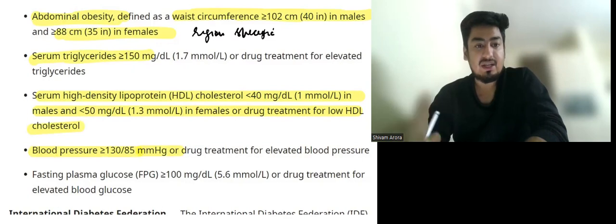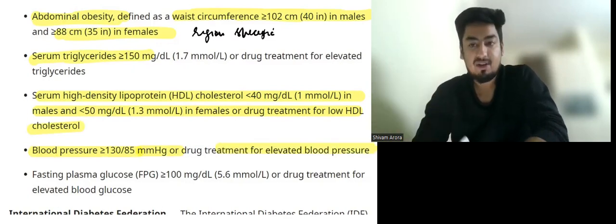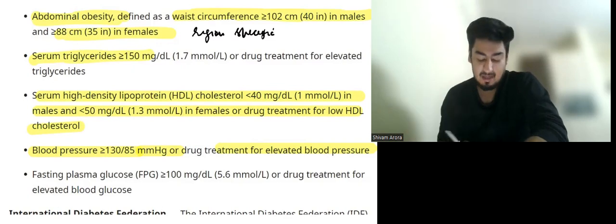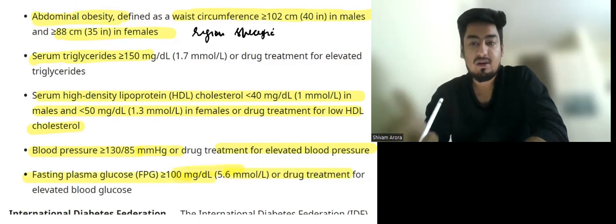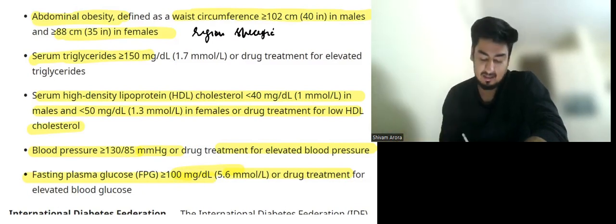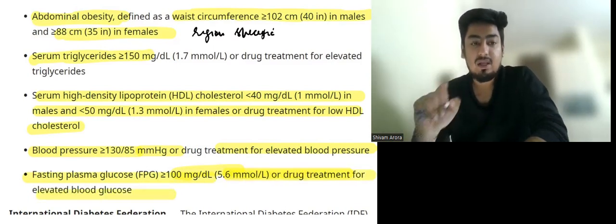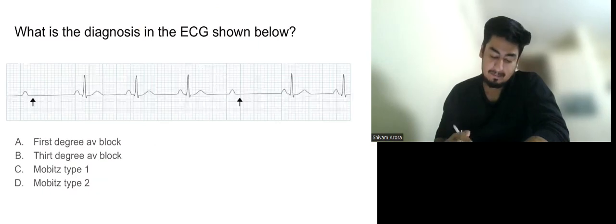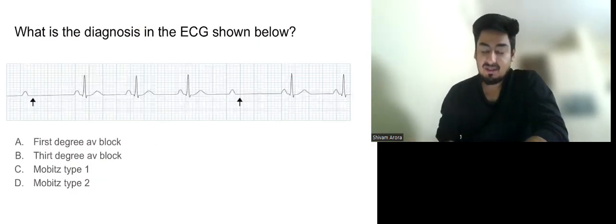Fourth, blood pressure more than 130 systolic or more than 80 diastolic, or drug treatment for elevated blood pressure. Fifth, fasting plasma glucose more than 100, or diagnosis of diabetes. Note: 110 to 126 is borderline pre-diabetes and more than 126 is diabetes, but here the threshold is 100 or drug treatment for elevated blood glucose. If three out of five criteria are positive, it is metabolic syndrome.